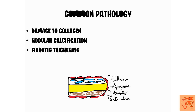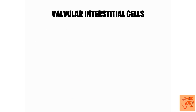Fibrotic thickening is usually seen in mitral stenosis occurring secondary to rheumatic heart disease. These three common pathological changes — collagen damage, calcification, and fibrotic thickening — can coexist or present alone. You need to remember these three changes along with the three histological layers to understand the upcoming videos.